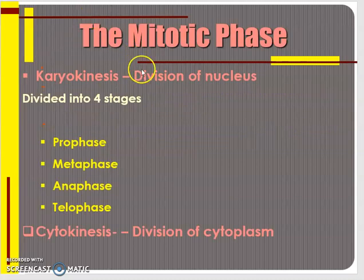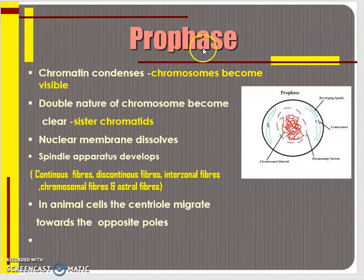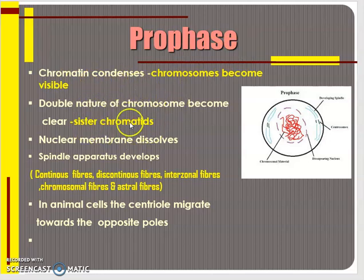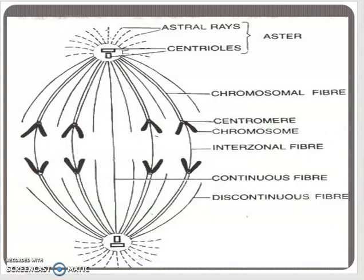After G2 phase, the mitotic phase starts, which has two subdivisions: karyokinesis, followed by cytokinesis. Cytokinesis is the division of cytoplasm. Karyokinesis is further divided into four steps: prophase, metaphase, anaphase, and telophase. In prophase, the chromatin which was already doubled now condenses and its double nature becomes visible in the form of sister chromatids. This is a diagram showing the five types of spindle fibers.